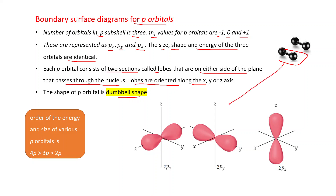These p orbitals are present in the second shell, so we write 2px, 2py, and 2pz. For 2px, the lobes are oriented along the x axis; for 2py, along the y axis; for 2pz, along the z axis. These axes are perpendicular to each other. The size and energy of p orbitals increase with n: 2p is smaller, 3p is larger than 2p, 4p is larger than 3p, and so on.